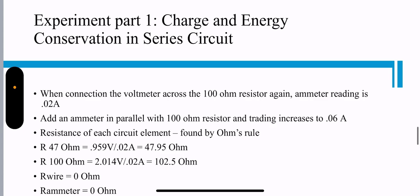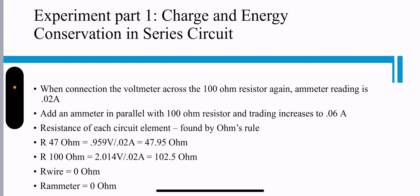Experiment part one, charge and energy conservation in series circuit. When connecting the voltmeter across the 100 ohm resistor again, the ammeter is reading 0.02A. Adding an ammeter in parallel increases the current to 0.06A.